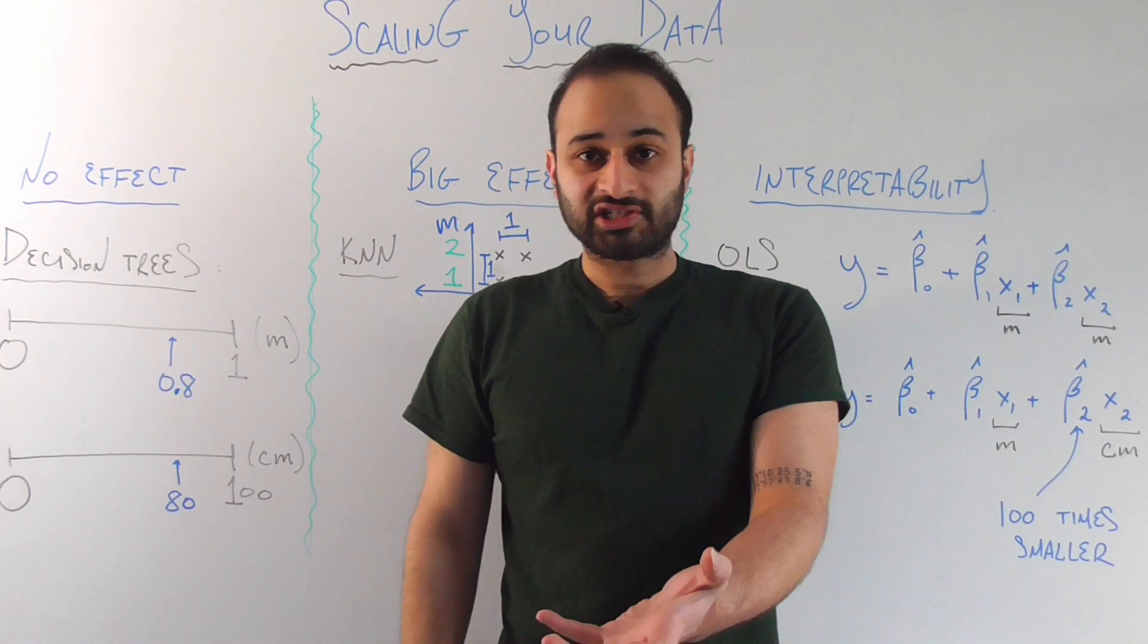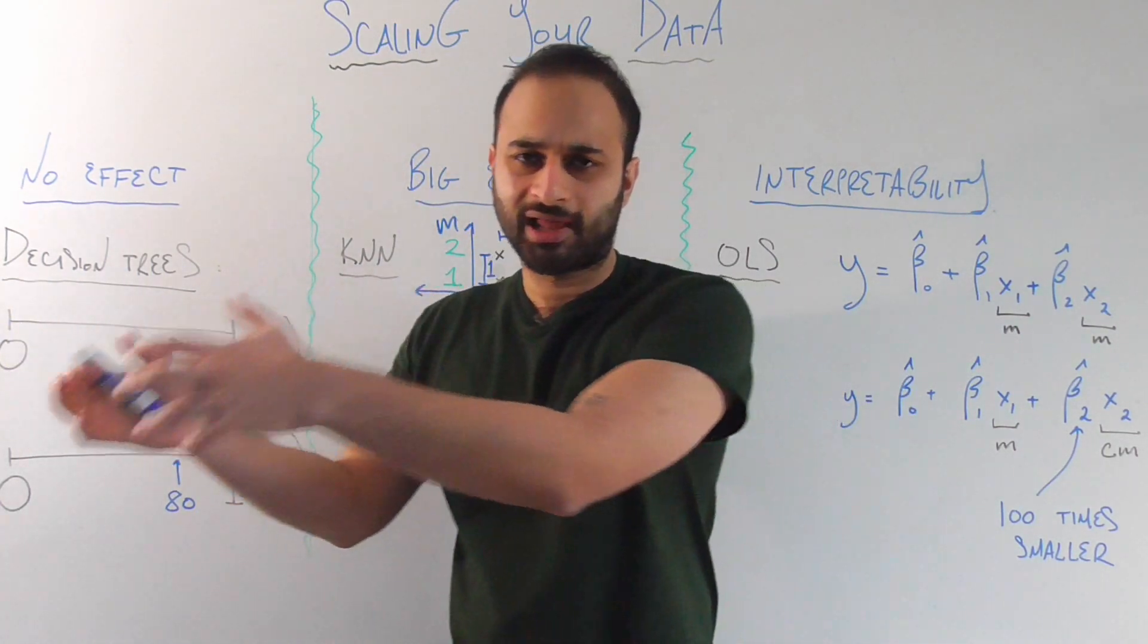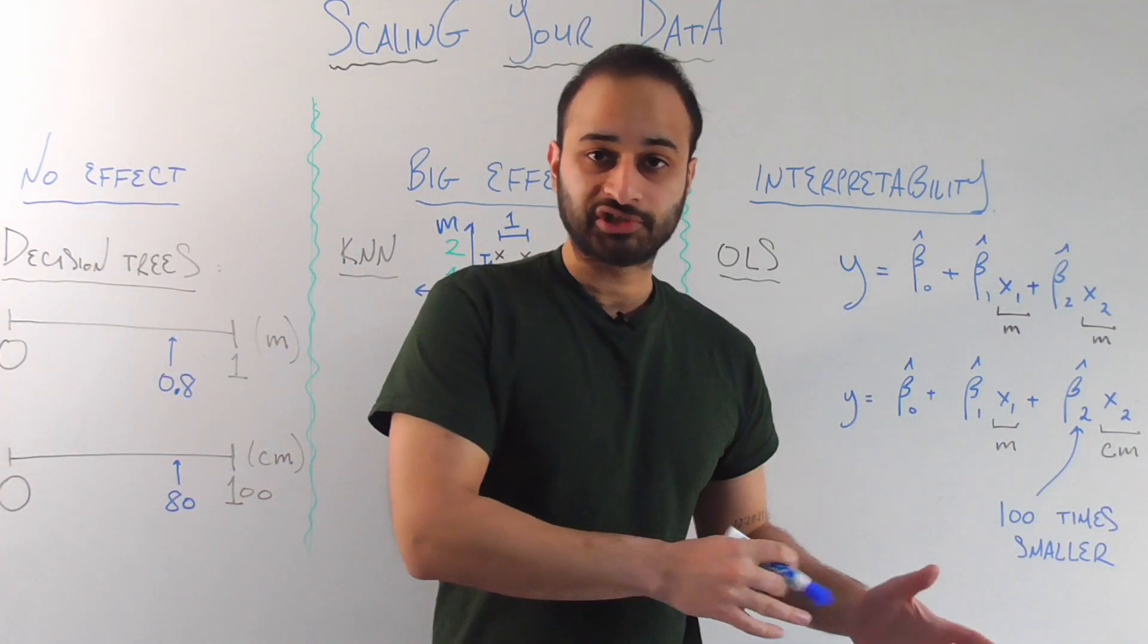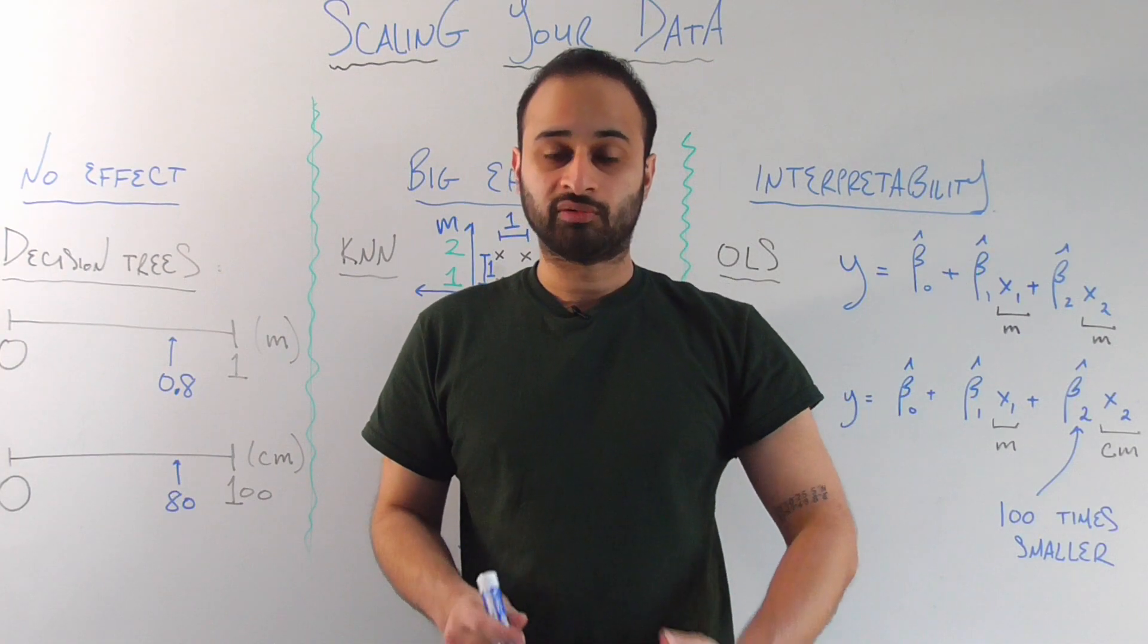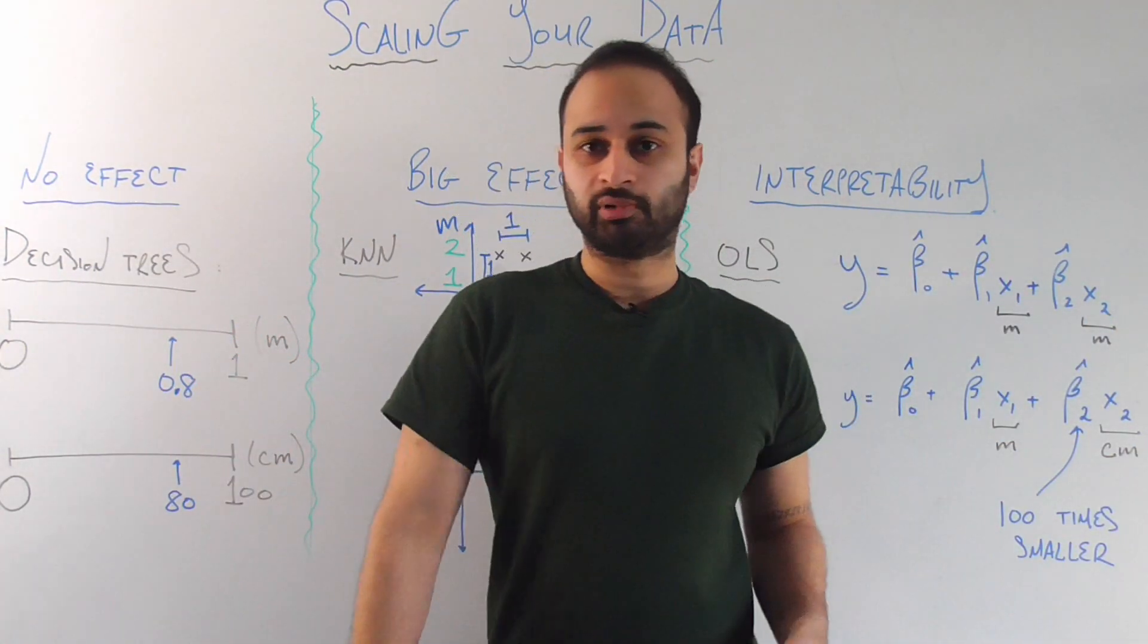It would choose that as the best because on the left of that split, there's a big majority of one class that you're trying to predict. And on the other side of that split would be a big majority of the other class. So it achieves a good separation between these two classes, and therefore it picks 0.8 as your split.